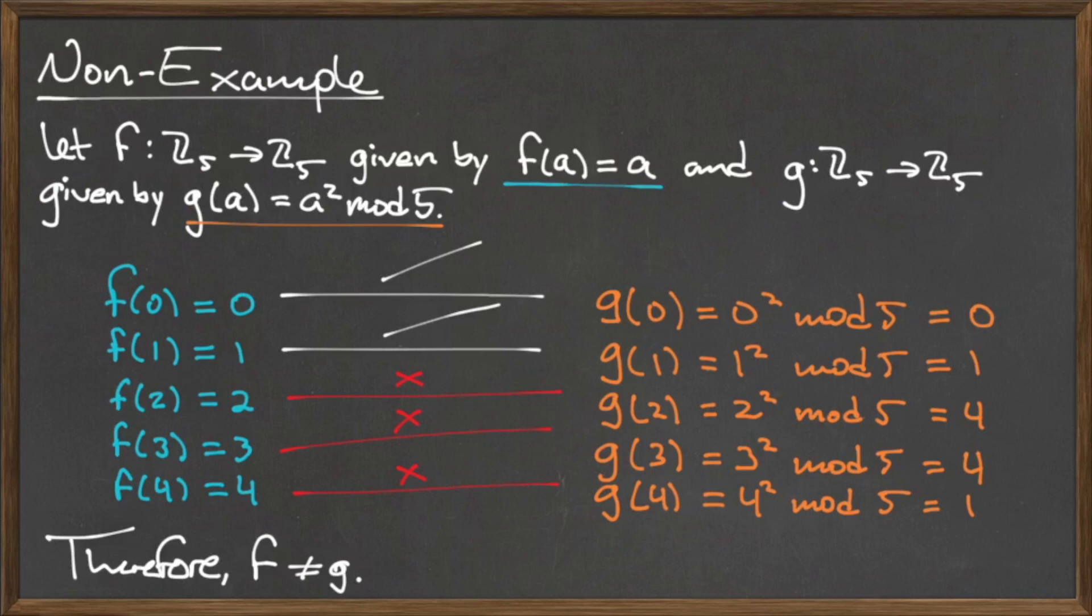The images for 0 and 1 under the functions f and g are the same. However, the images for 2, 3, and 4 under f and g are not the same. Since the output values for f and g do not agree at all input values, we say that f and g are not equal.